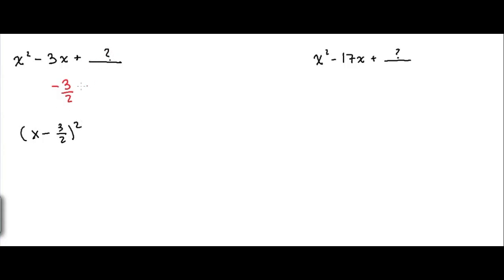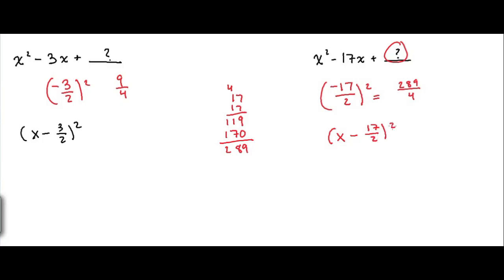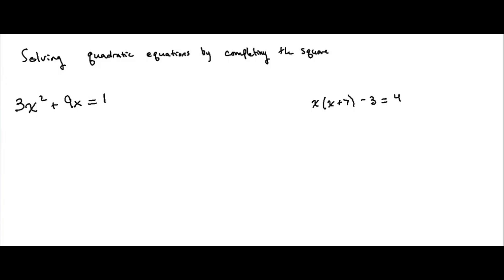Some more examples. To find these, all we're going to do is take half the linear term and square it. So negative 3 over 2, squared — and that will be part of the square. Over here, x squared minus 17x: half the linear term squared will be the constant. That will be 17 over 2, squared. Let me multiply this out — 17 squared is 289. So we'll have 289 over 4, which does not reduce. Writing this as a square, we're going to get x minus 17 over 2, quantity squared.